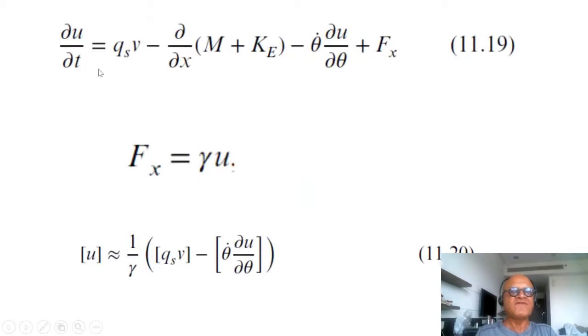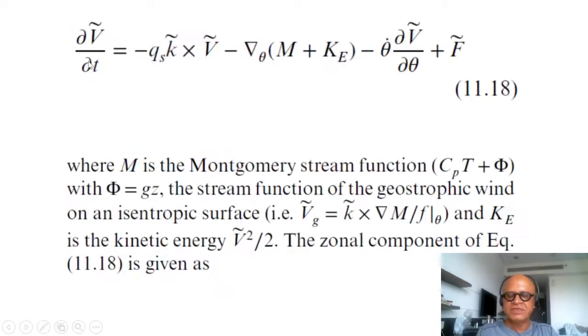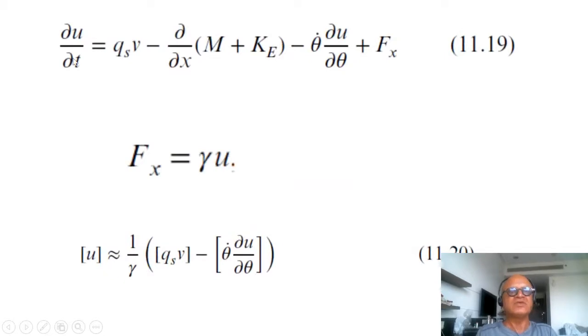So this equation can be written this way. In the zonal component, this is the vector form, this is the zonal component. Upper level zonal winds are related to the meridional advection of the PVS and this stream function kinetic energy term.